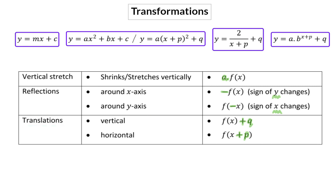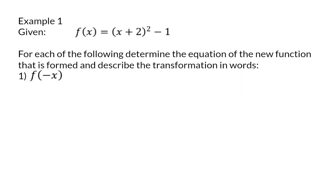All these transformations can be described to you in words or by using function notation like in the column on the right. For each of the following, determine the equation of the new function that is formed and describe the transformation in words. Function f is a parabola, and the a-value of this parabola is positive, which means it will be concave up. The turning point is given by minus p and q, which means it will be at minus 2 and minus 1. The parabola will then look something similar to this.